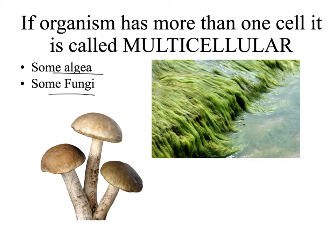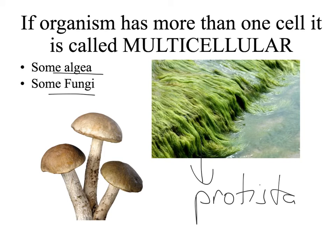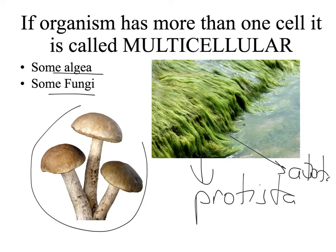Other multicellular organisms include algae and fungi. These algae are members of the Protista kingdom, but they are not unicellular — they are multicellular. These algae can perform photosynthesis, therefore they are autotrophic and can produce their own food. They have a nucleus, so they are eukaryotes.